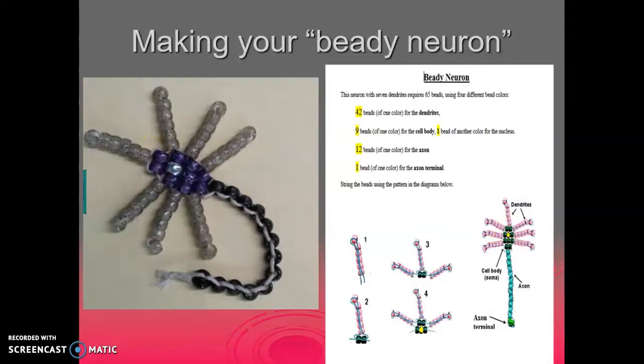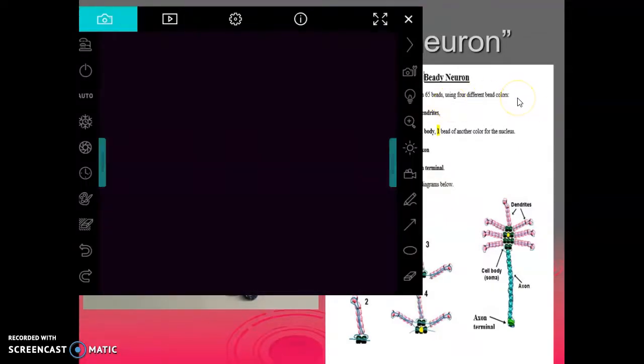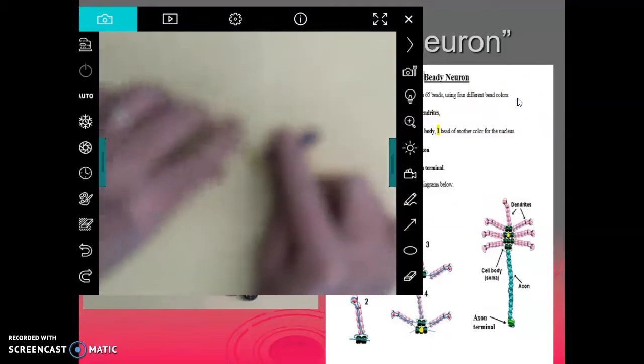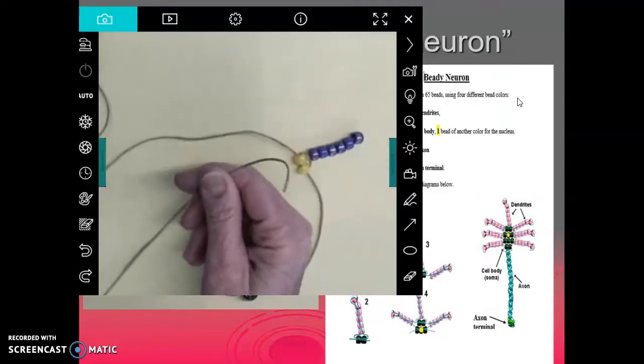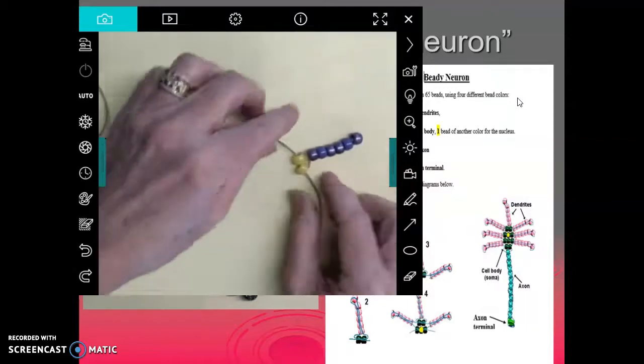So, in my case, if my soma color is going to be yellow, then what I'm going to want to show is this. Let me pull this up for you guys to see. So you take your 6 and then at the end, you feed two of your soma color onto the end of the string and pull it over. And then what you do is you go through them.